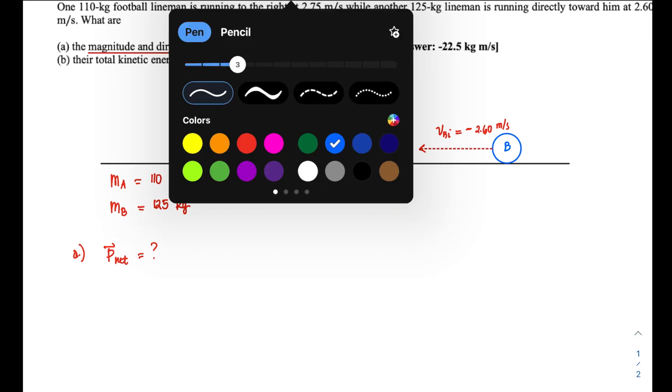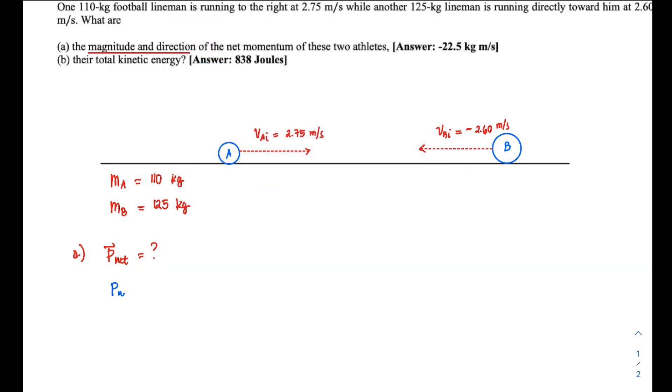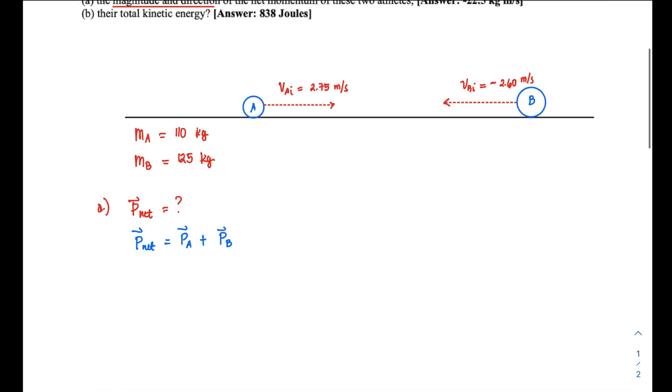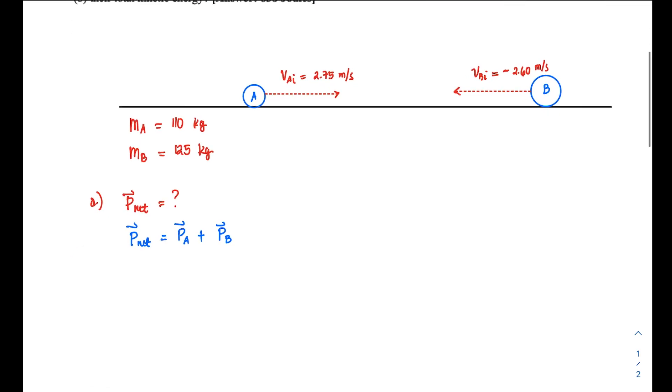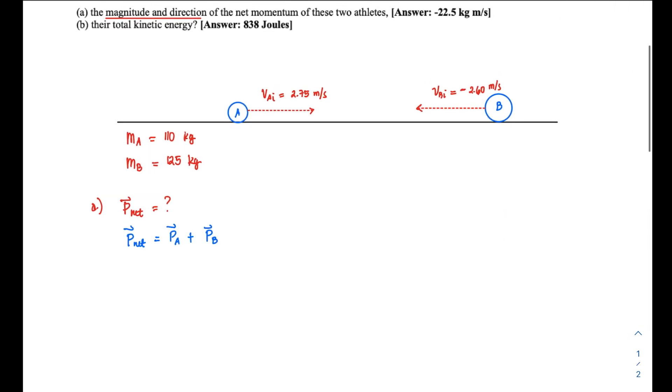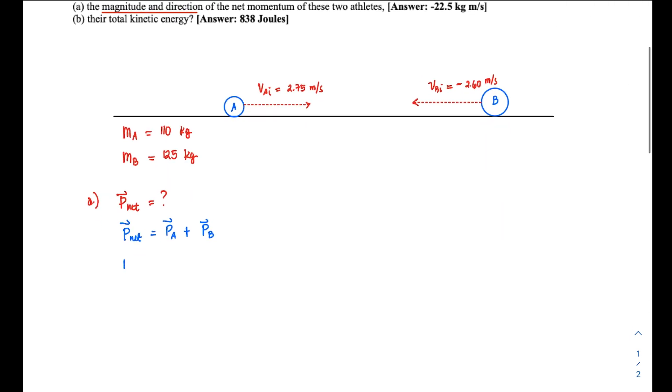object A (first lineman) plus the momentum of object B. I call it vector sum because we're dealing with vectors, which is different from algebraic sum. So P_net, breaking it down, is: m_A × v_A,i plus